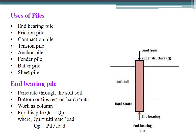Based on function, the different types of piles are: End Bearing Pile, Friction Pile, Compaction Pile, Tension Pile, Anchor Pile, Fender Pile, Batter Pile, and Sheet Pile. An End Bearing Pile penetrates through soft soil, with its bottom or tip resting on hard strata, working as a column. For this pile, QU equals QP, where QU is the ultimate load and QP is the pile tip load. The pile passes through soft soil and rests on hard soil below, which is why it is called an End Bearing Pile.